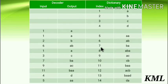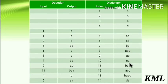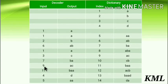Next input is 7. It is already in the dictionary. Enter in dictionary: prior_string 'c' plus first symbol of string of codeword 7. String of 7 is 'ba', first symbol is 'b', so we get 'cb'. Increment index and output string of codeword 7, which is 'ba'. Next input is 9. It is already in the dictionary. String of 9 is 'ac', so output 'ac'.